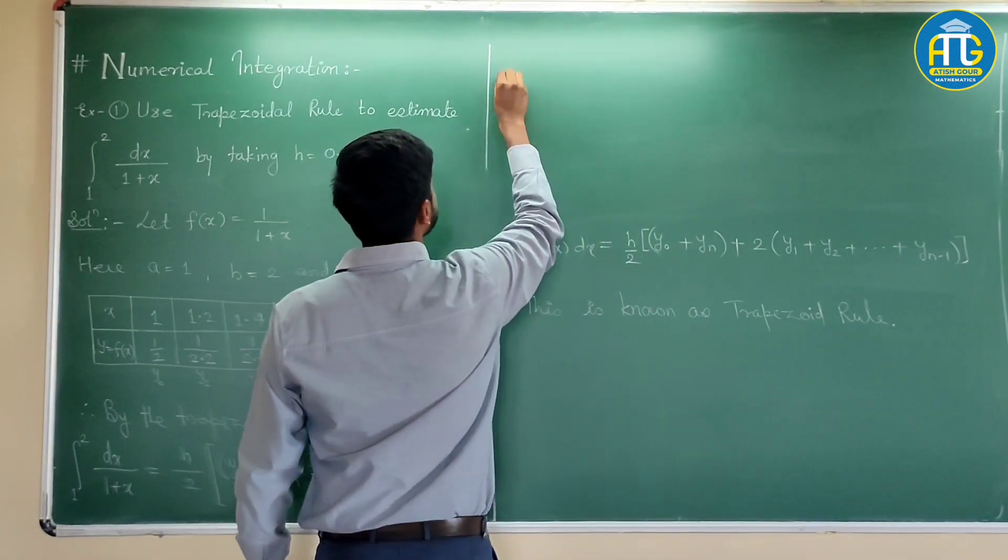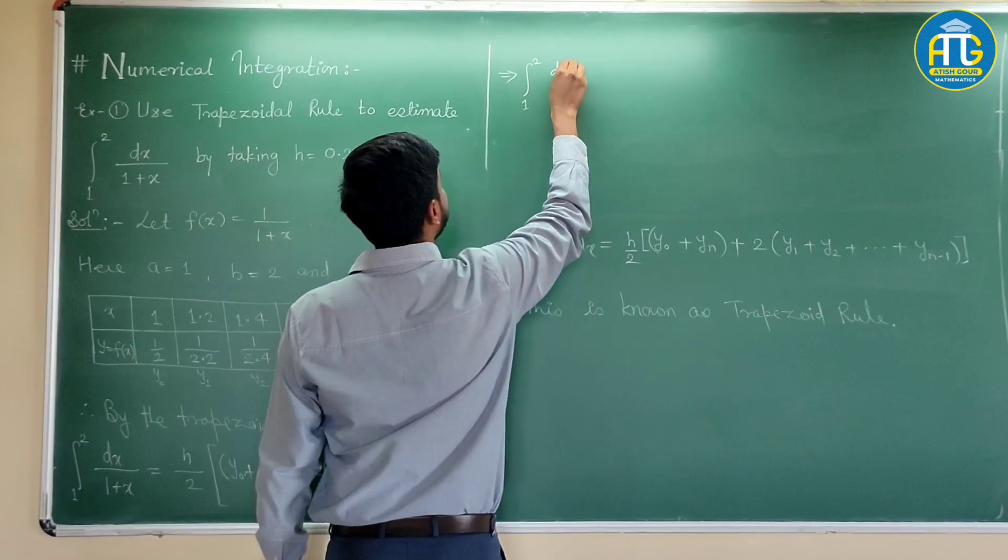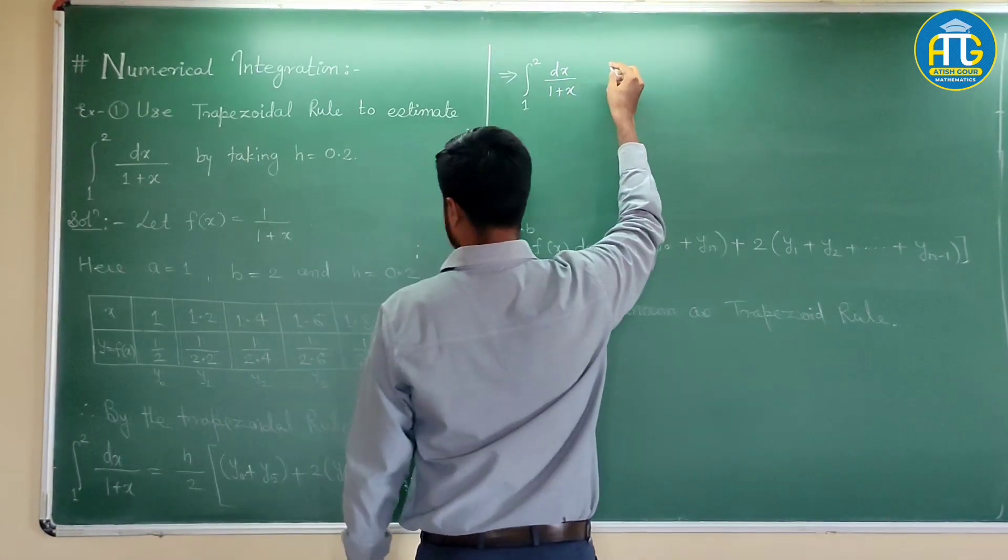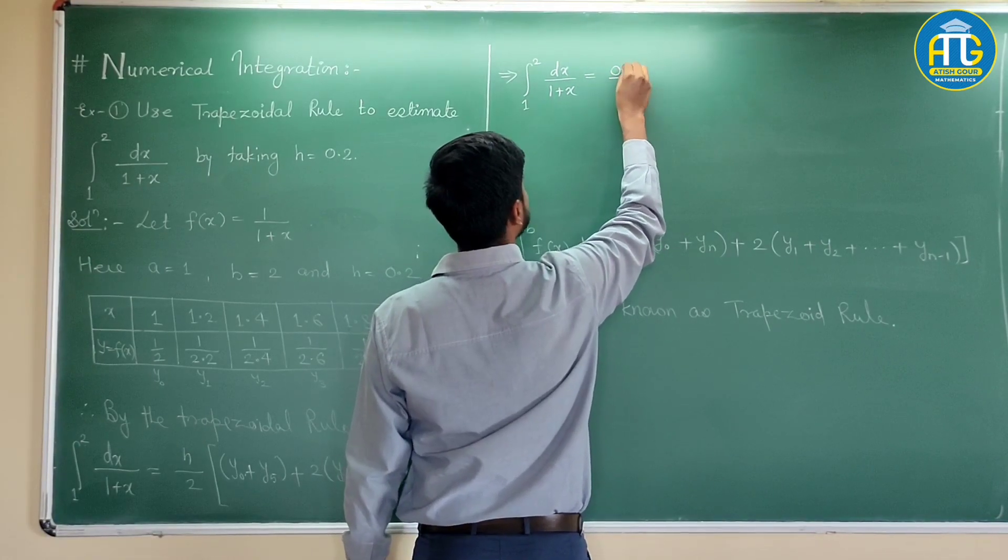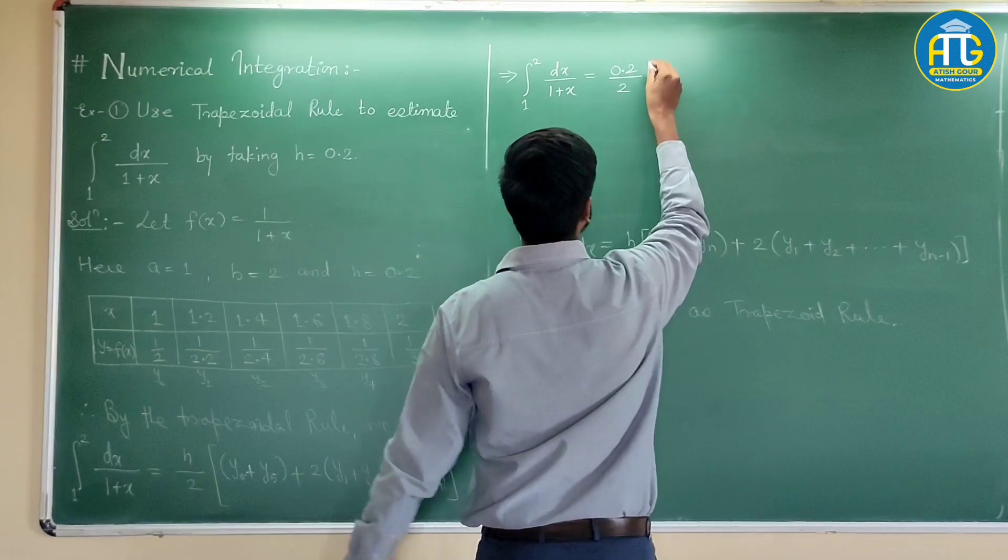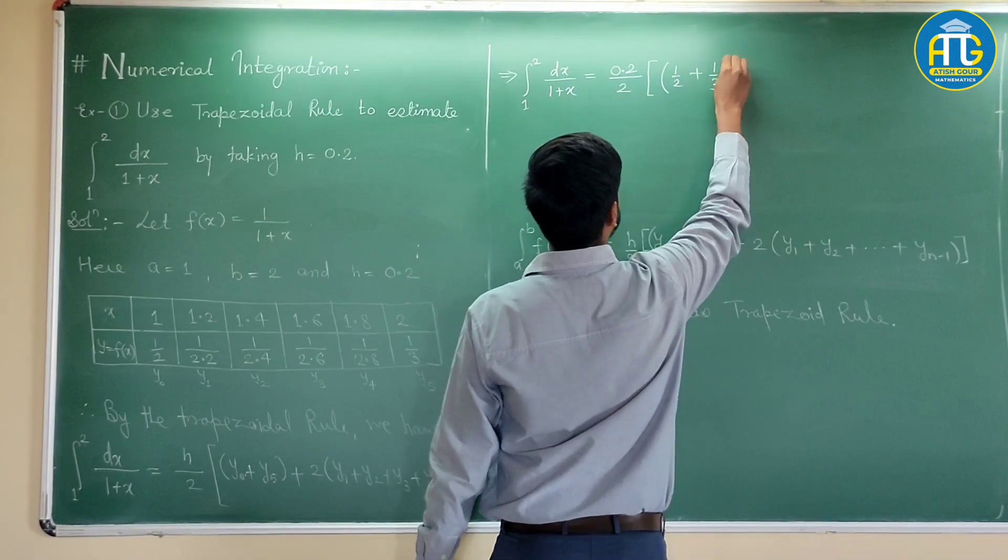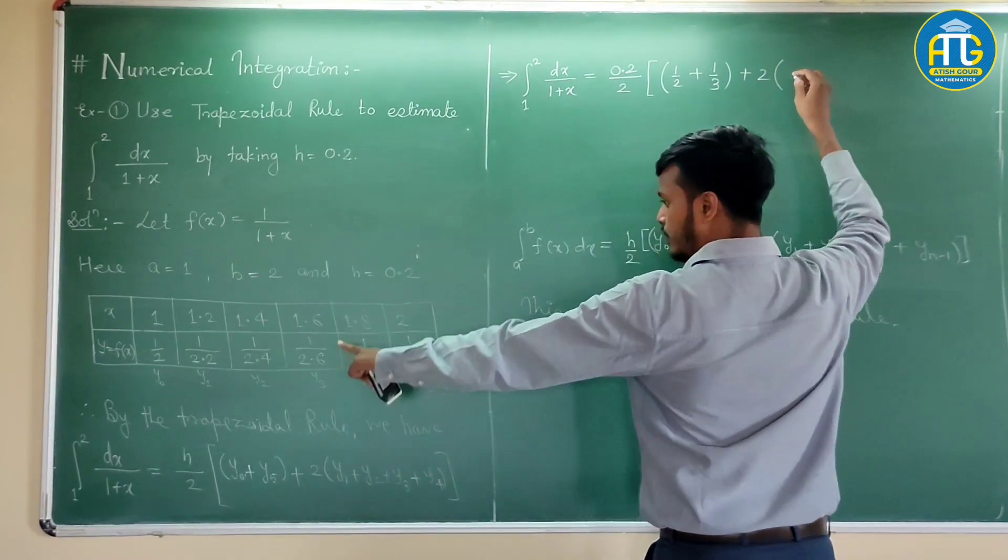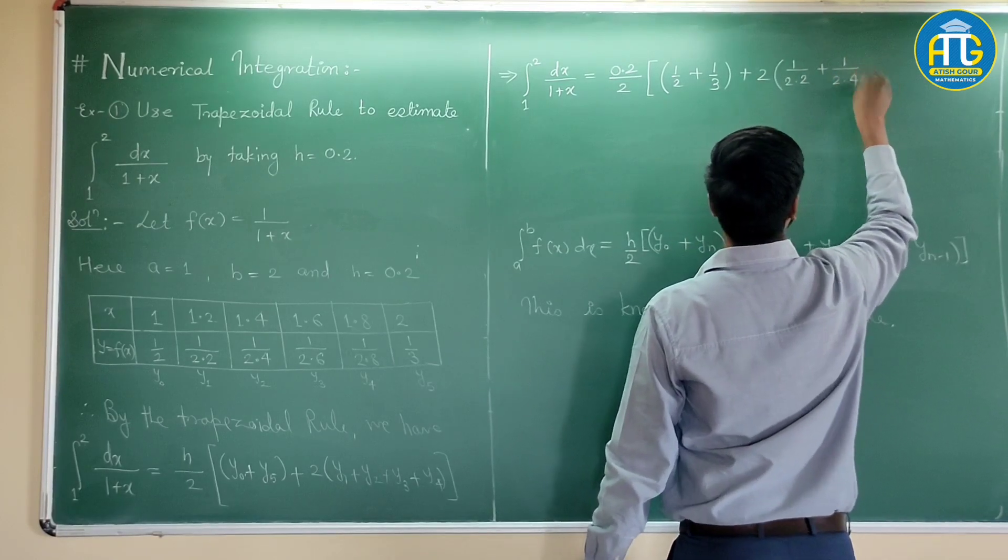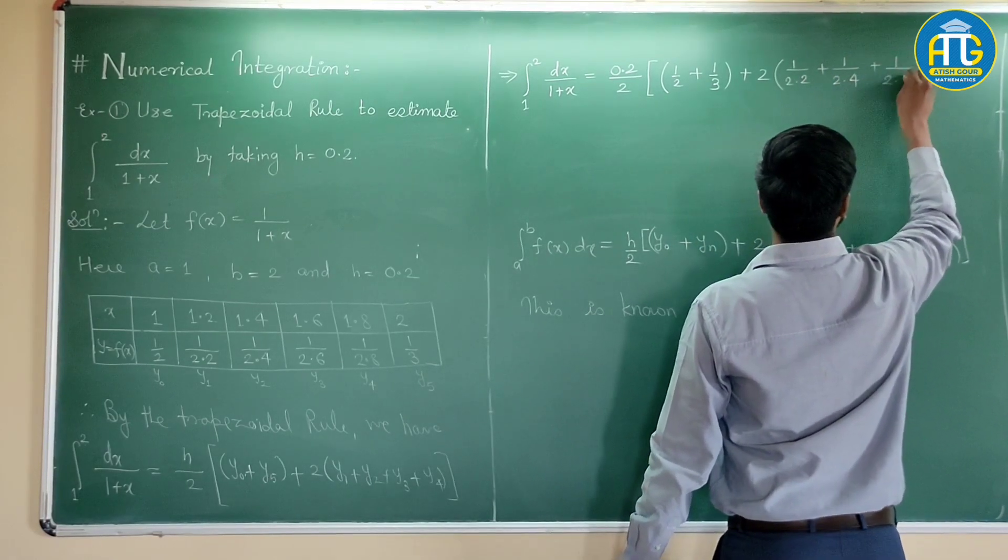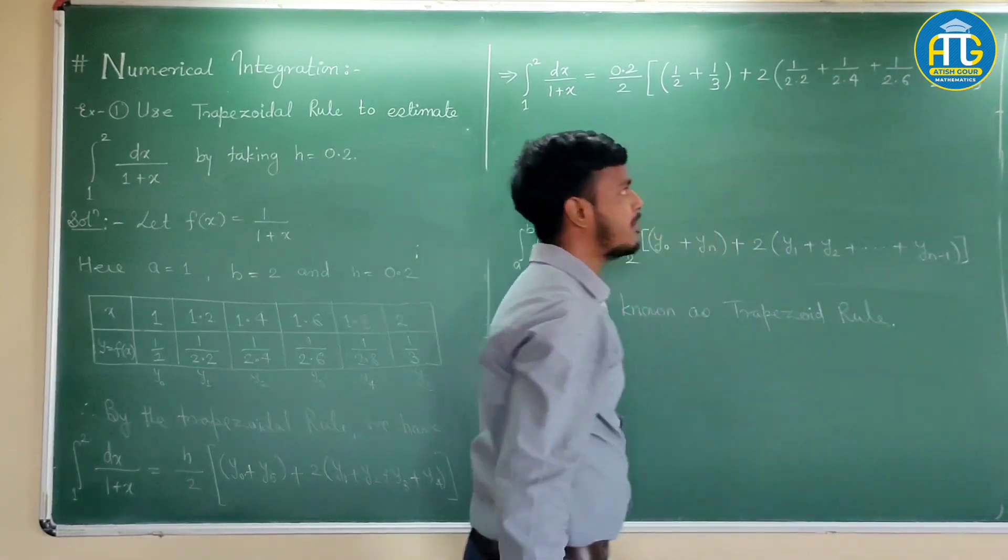This implies integration from 1 to 2 dx upon 1 plus x is equal to h by 2 value of h is 0.2 by 2 into what is the value of y0, that's 1 by 2 value of y5, 1 by 3 plus 2 times the values of this, 1 upon 2.2 plus 1 upon 2.4, 1 upon 2.6 plus 1 upon 2.8 and this completes.